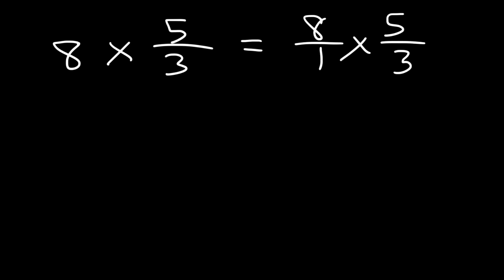In this case 8 and 5 they're not large numbers. So we can multiply across. And we can't really simplify before we multiply in this case. So 8 times 5, that's going to be 40.